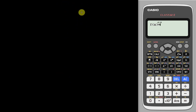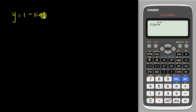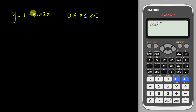Let's say the question asks me to sketch a graph like y equals 1 minus 3 sine 2x. Normally in SPM, graph questions are given in radians, so they'd ask you to sketch between 0 and 2pi. I'll make the question a little harder — let's say it's 1 minus 3 sine 2x, and I want to sketch this graph quickly.